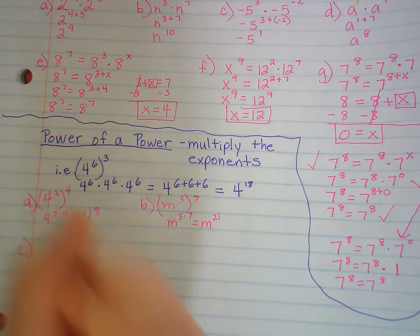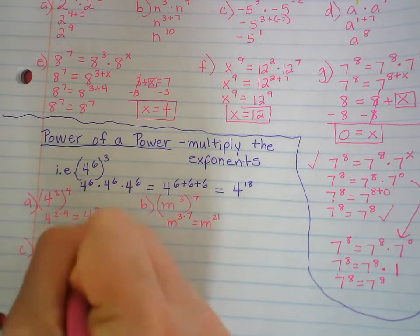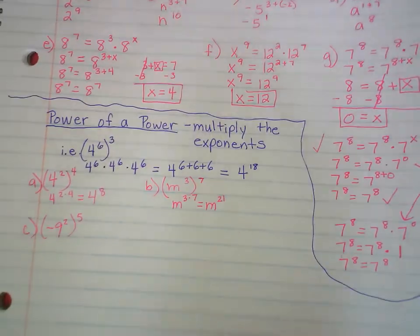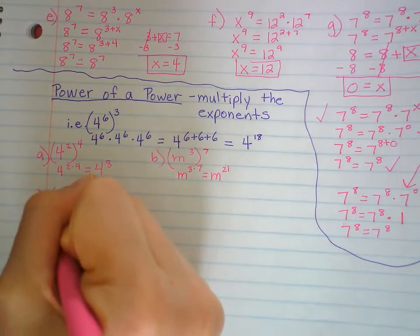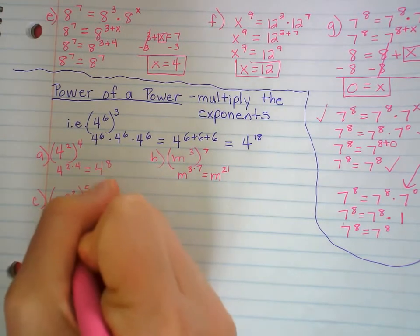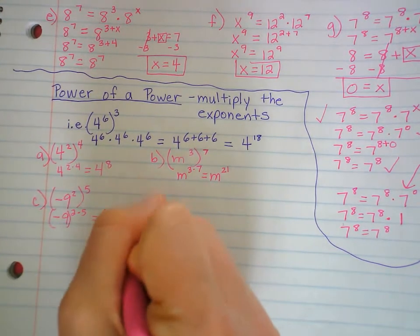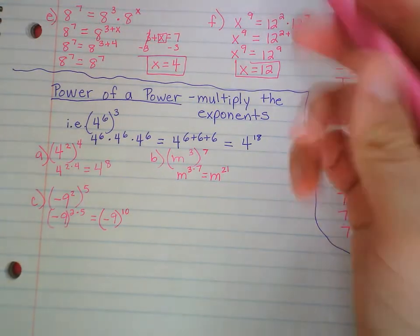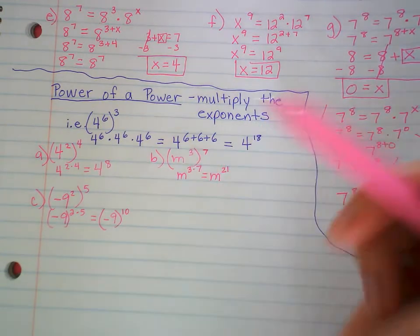What if we have negative 9 to the 2nd to the 5th power? Try that one on your own. They don't have the same base, so we just multiply the exponents: negative 9, 2 times 5 is 10, so negative 9 to the 10th power.